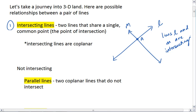The important thing to realize is that if we have intersecting lines, then the lines are coplanar. Both of them can exist within the same plane.